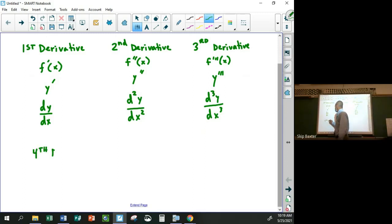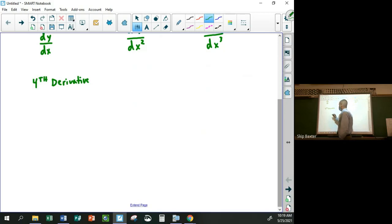some books will switch to Roman numerals. Like they'll have f and then like a little IV, which is like the Roman numeral four of x.